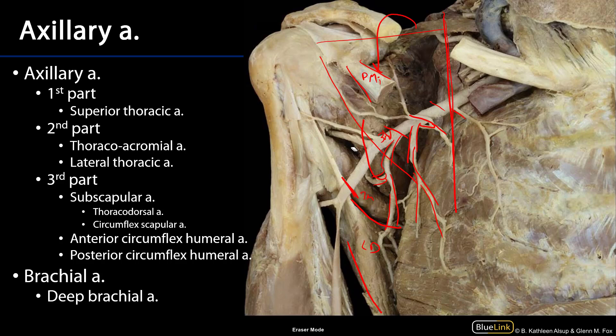Also coming off the third part of the axillary artery are the circumflex humeral arteries — there's a posterior and an anterior. These wrap around the neck of the humerus. The posterior circumflex humeral artery is transmitted through the quadrangular space and is typically accompanied by the axillary nerve, a branch of the brachial plexus. Both circumflex humeral arteries supply the proximal humerus, but are the predominant blood supply to the deltoid muscle.